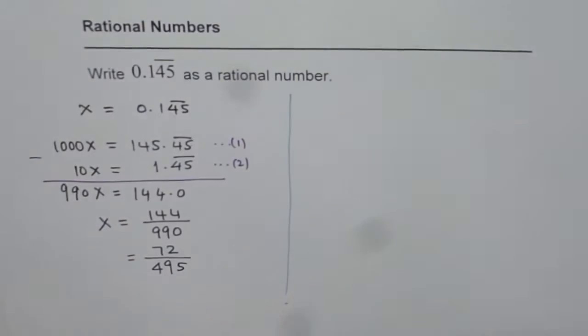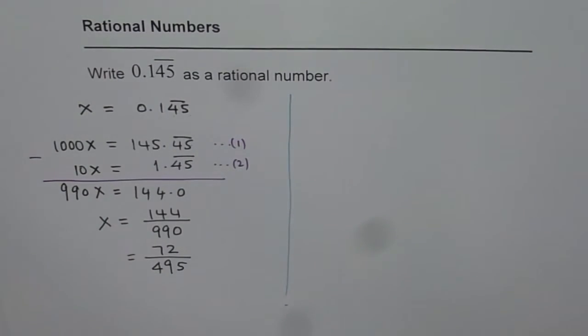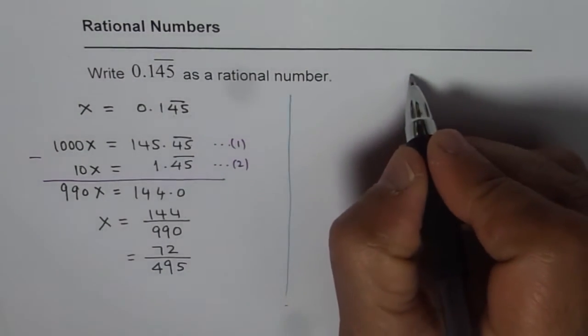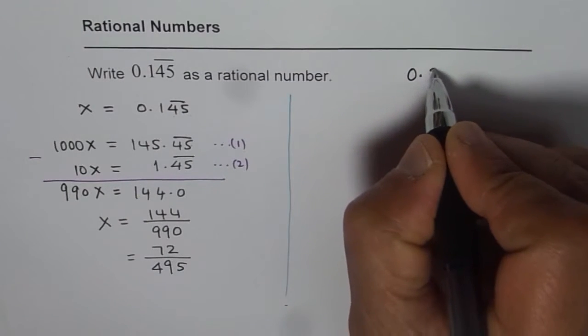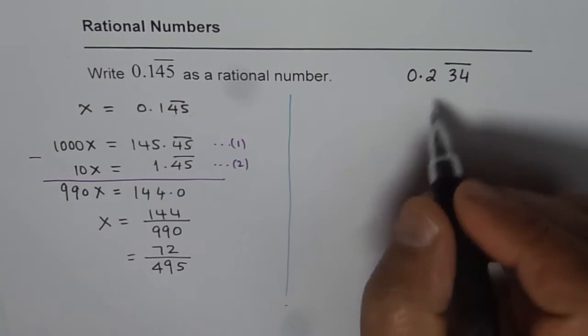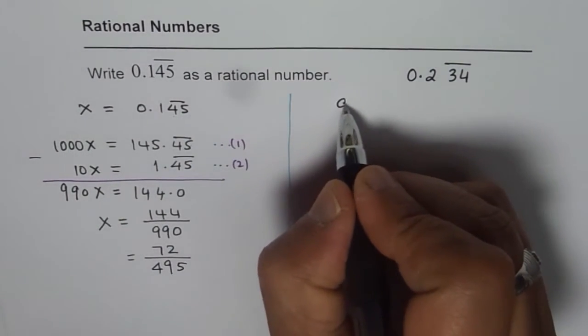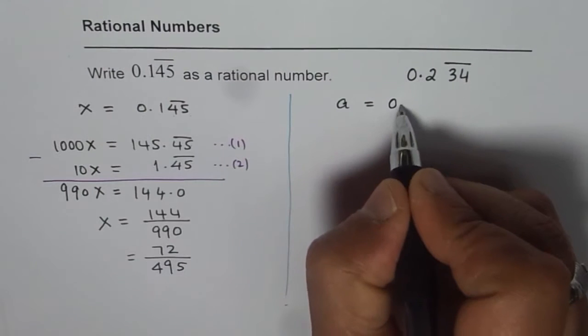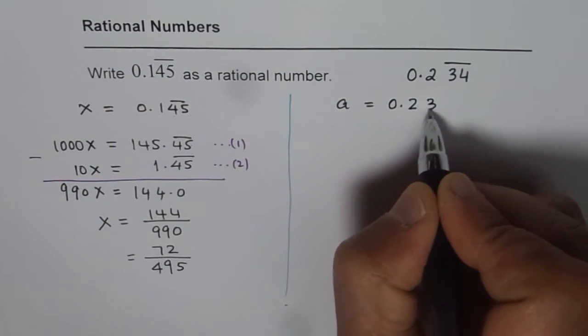Let us do one more example. It is not that difficult. I hope you have understood. Let me take one example as 0.2. 34 recurring. So let a number A equals 0.234 recurring.